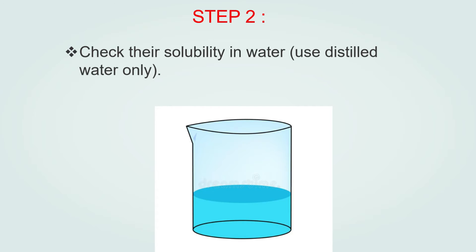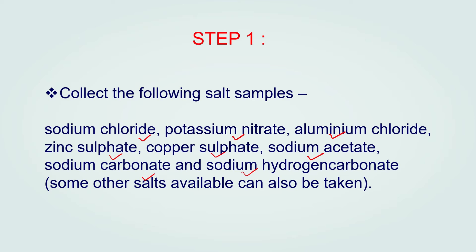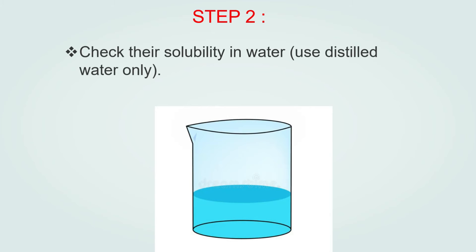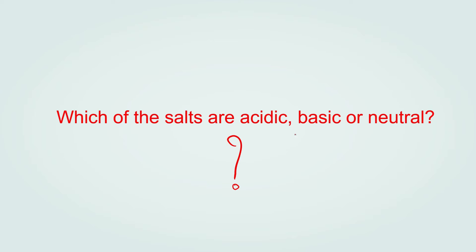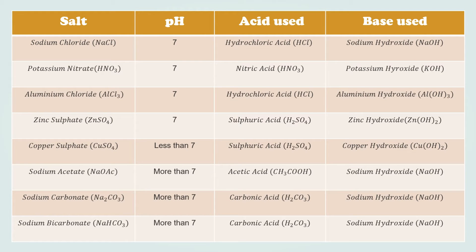Step 2: Check their solubility in water. Note: you have to use distilled water. Dissolve each salt in water and check which salt is soluble and which is not. Step 3: Check the action of the salt on litmus and find the pH using pH paper. As we learned in previous video lectures, after dissolving the salt in water, you have to do a pH test of each sample.